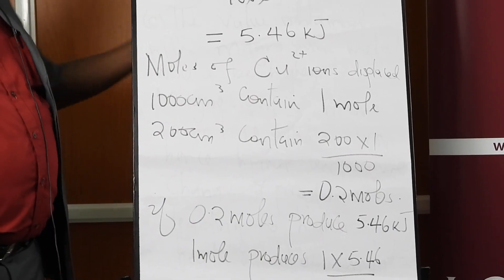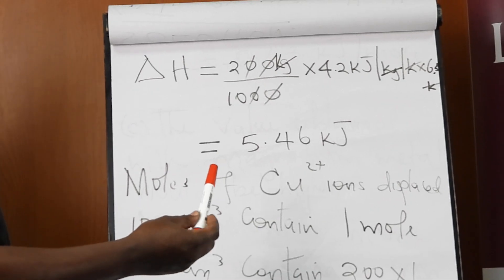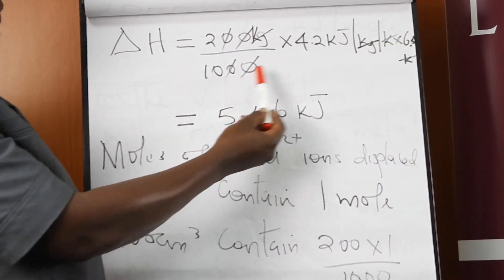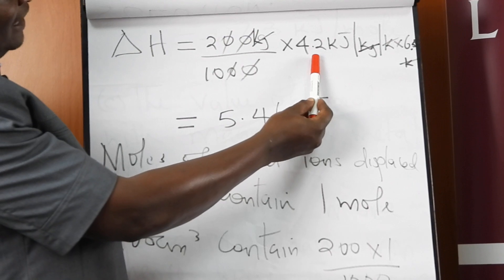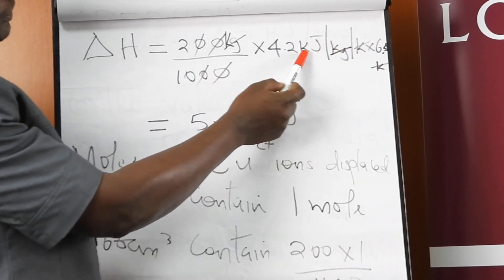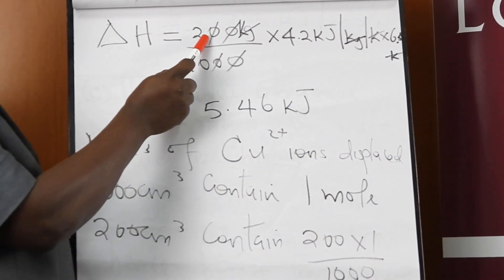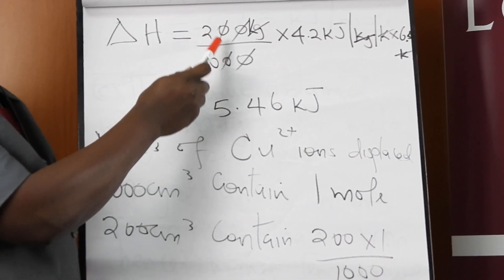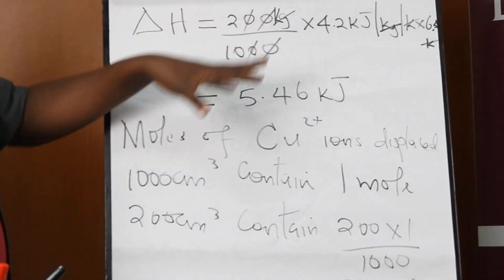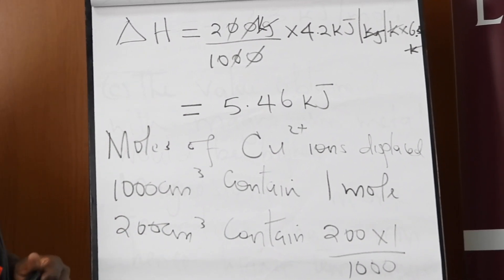Substituting into delta H = mcΔT — note that c was given as 4.2 kJ/kg/K, so mass must be converted to kilograms by dividing by 1000. After substituting and working out, you get 5.46 kilojoules.